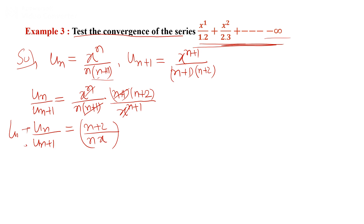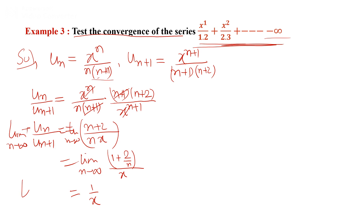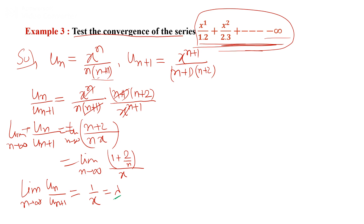Applying the limit as n tends to infinity, we take n as common and write: limit as n→∞ of (1 + 2/n) / x. After applying the limit we get 1/x. This is lambda. The convergence depends on lambda: if lambda > 1 the series is convergent, if lambda < 1 the series is divergent.